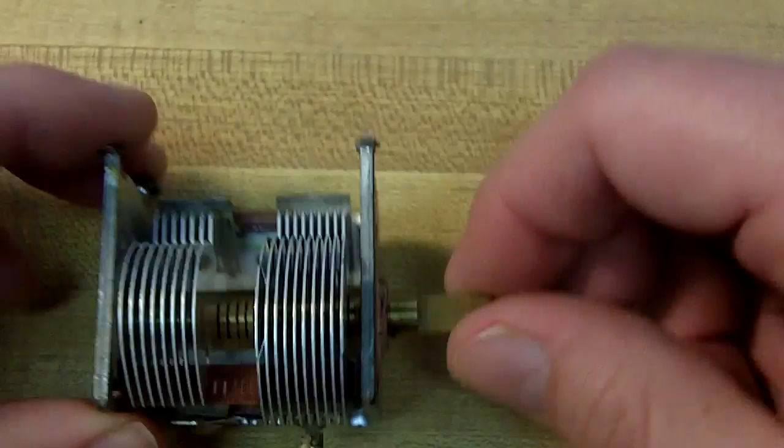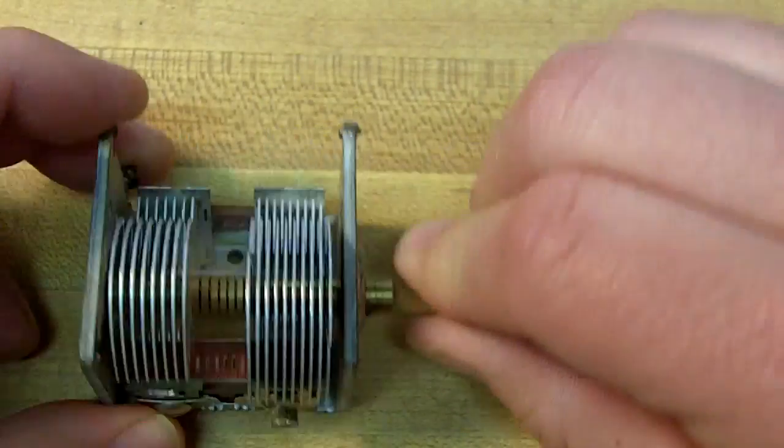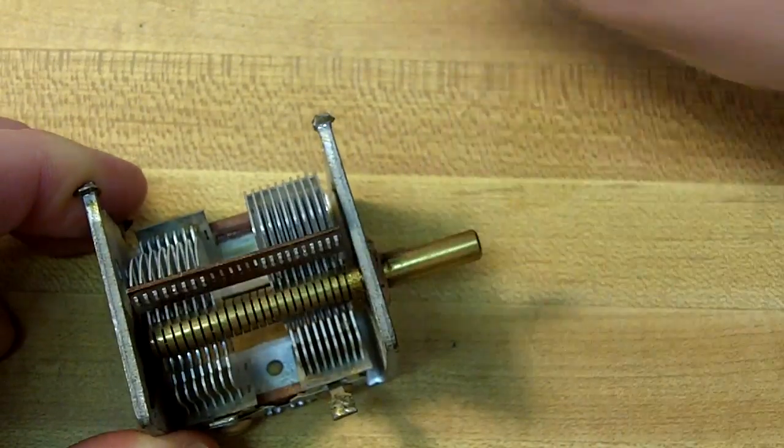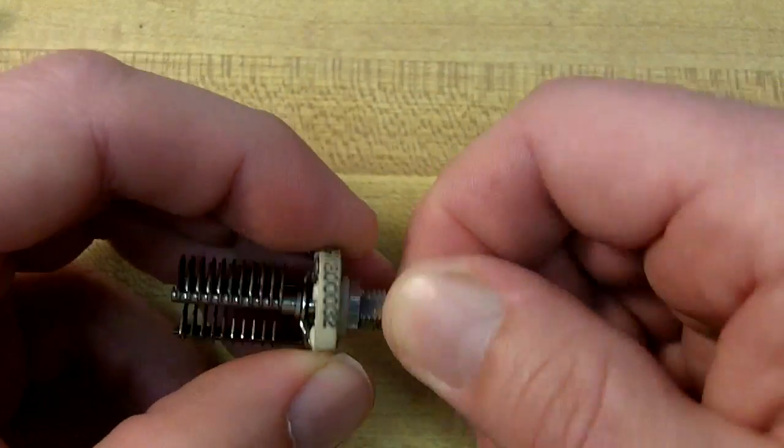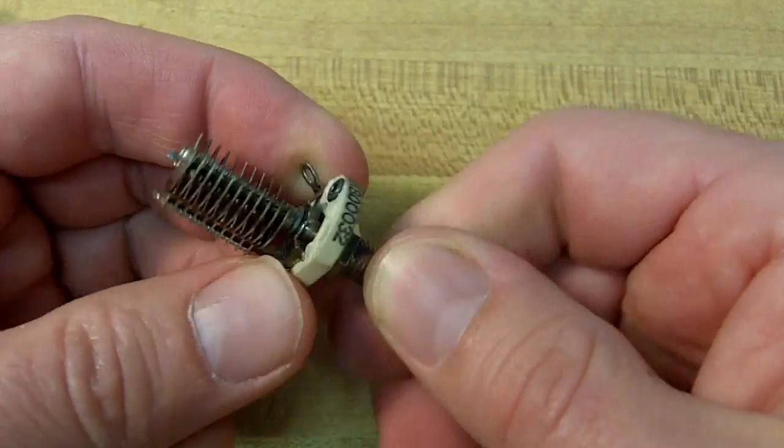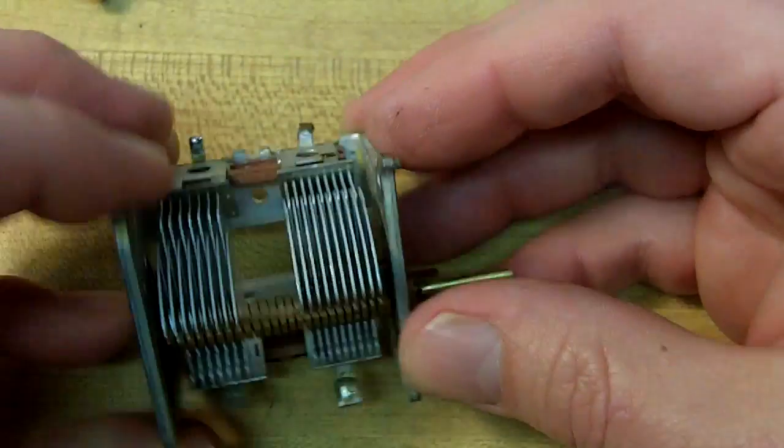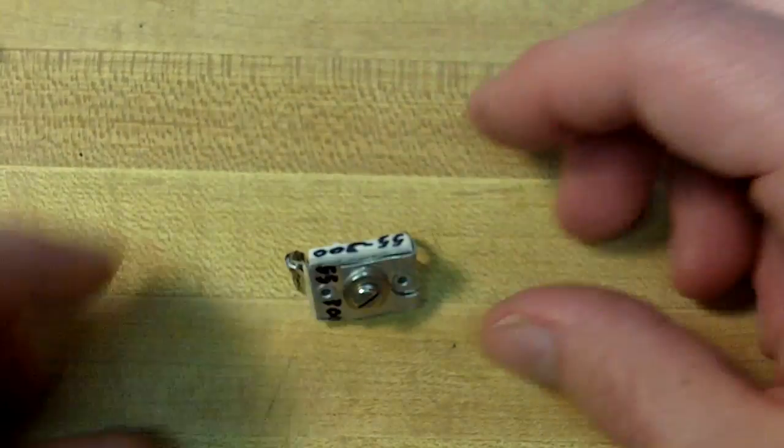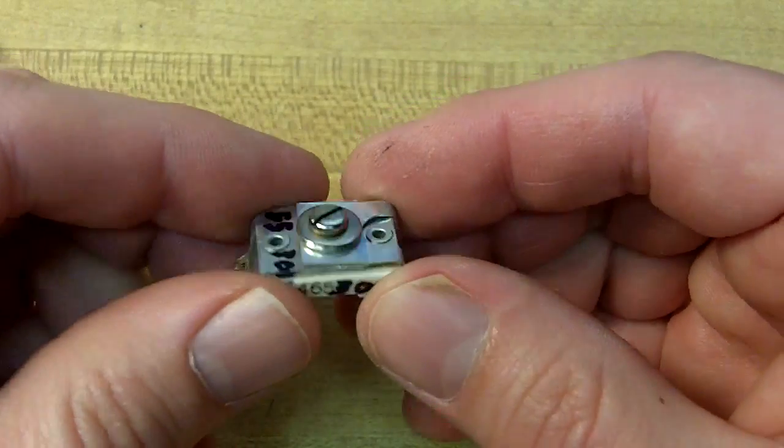We also have capacitors. These are variable capacitors found mainly in your older type radios now, but they change tuning in a circuit. That's what a variable capacitor looks like, a typical one. They also come in circuit mount styles so you can set them and leave them.